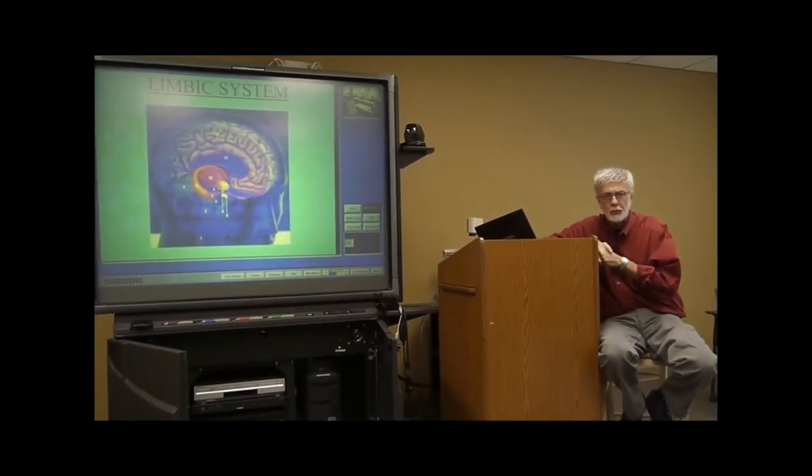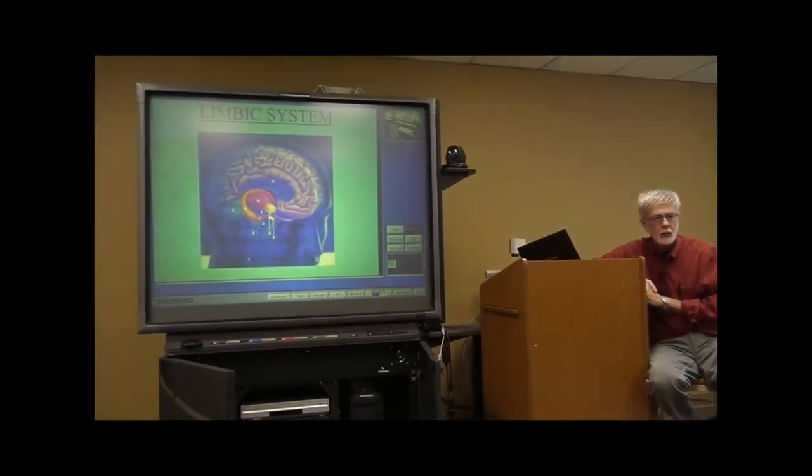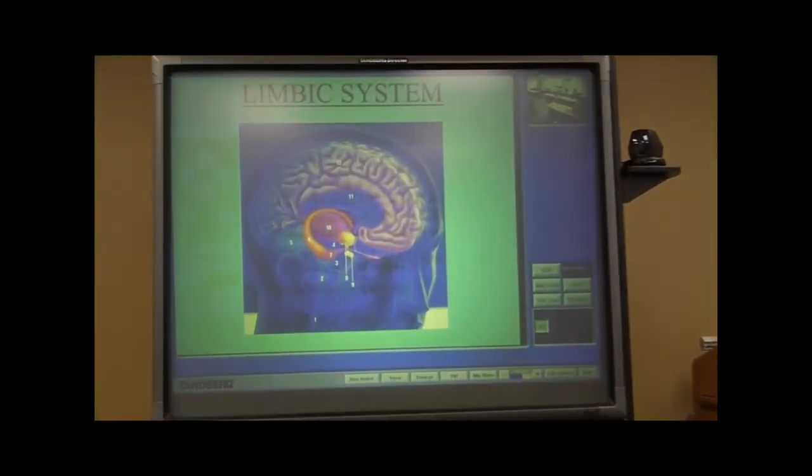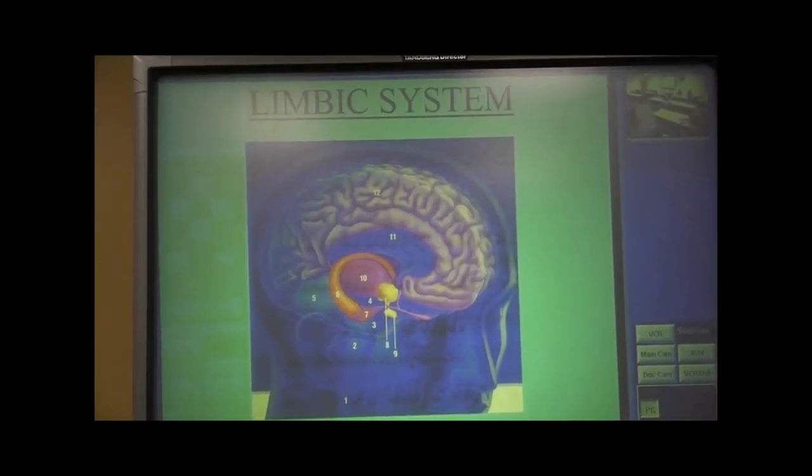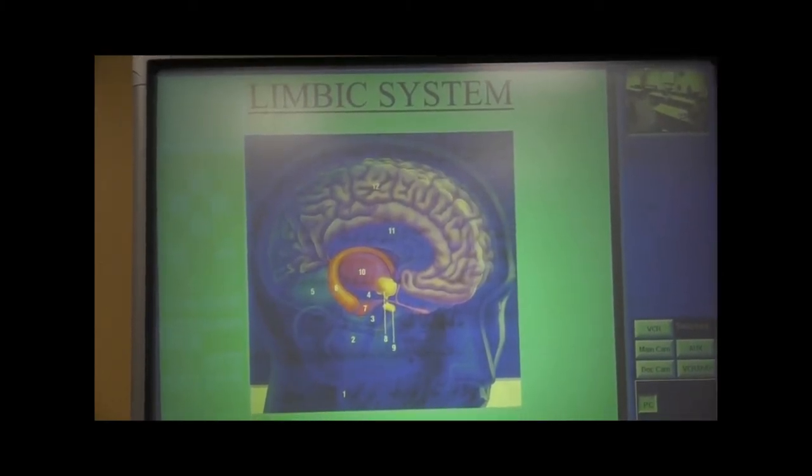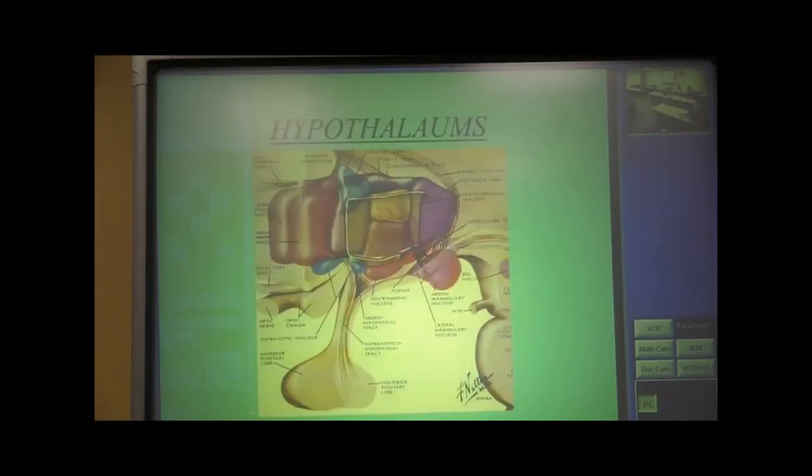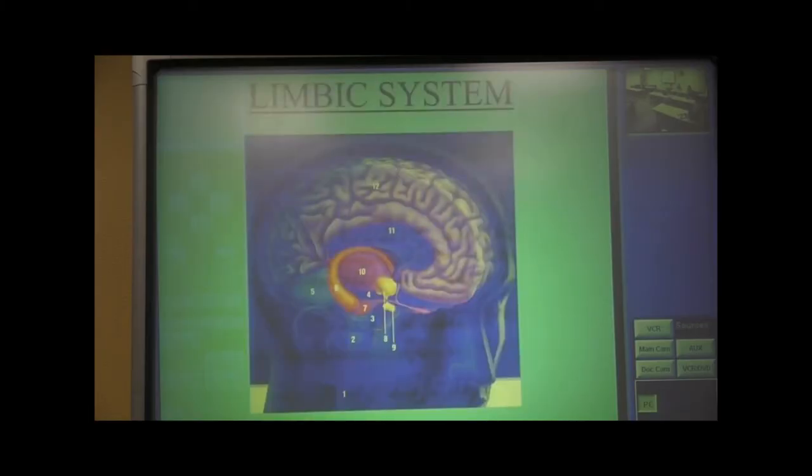So we've talked about the limbic system before. We're going to come back to this again. You remember I said that we'll take many different passes through some of this material, and I think it's going to get to the place where all of you are going to be really familiarized with the various brain structures and their function. I'll go back here for just a second. Now, in the limbic system, there are several brain structures that we're going to be talking about. I've mentioned these before. Let me briefly show these to you again.